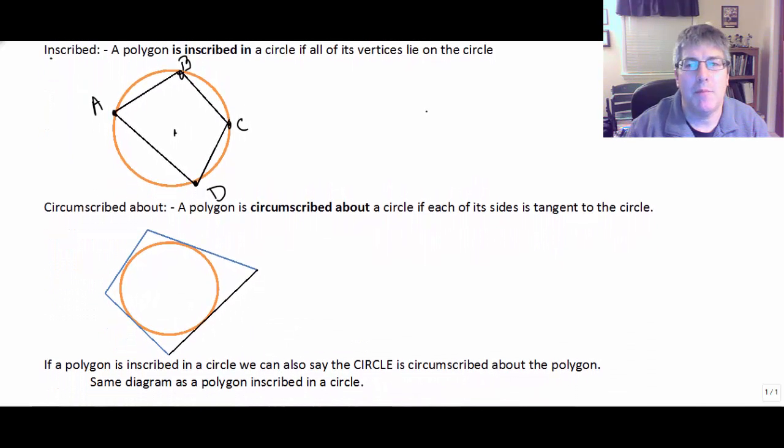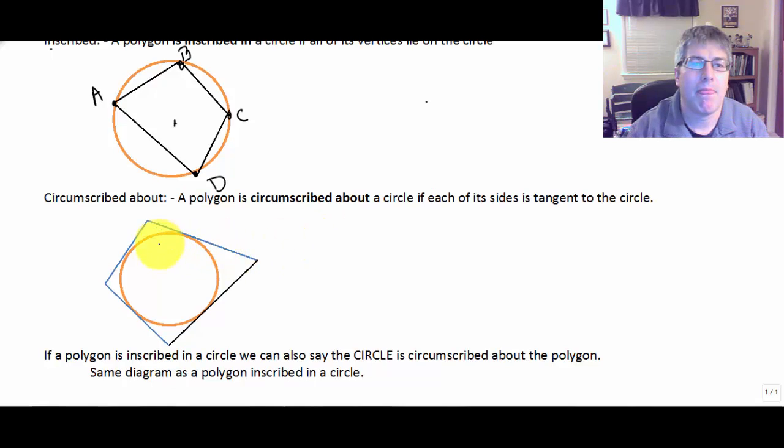Circumscribed about - a polygon is circumscribed about a circle if each of its sides is tangent to the circle. These are all tangent points, and we would say the polygon is circumscribed about the circle.